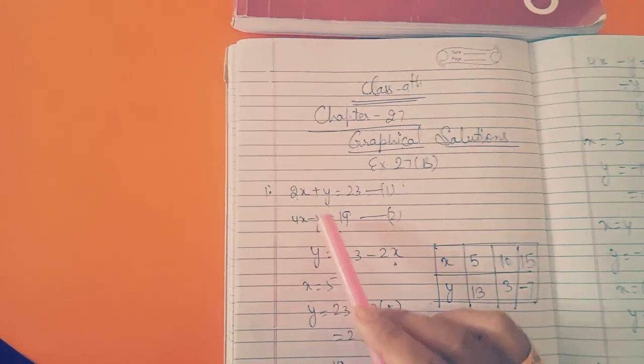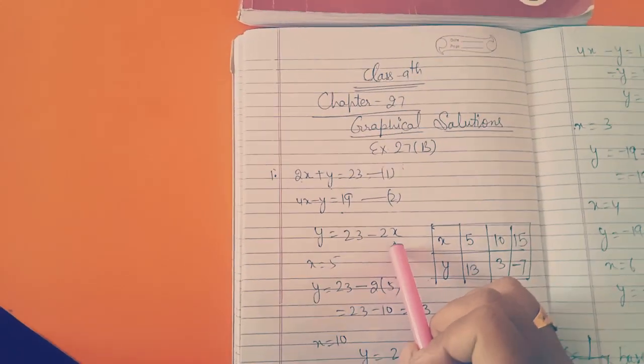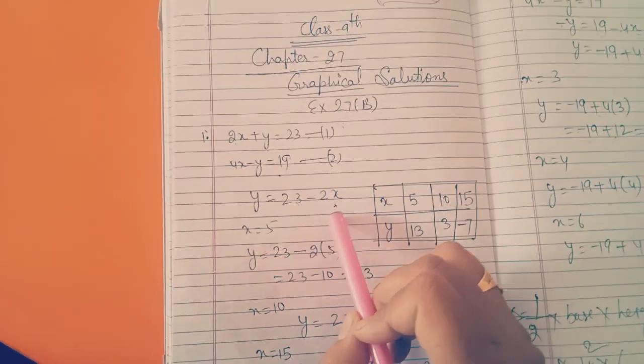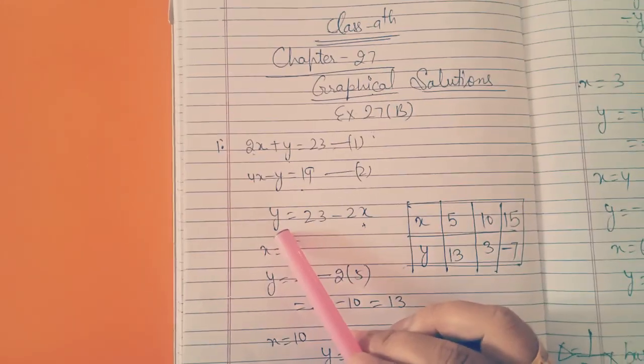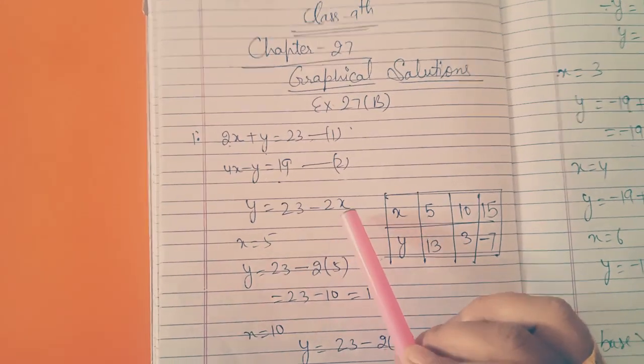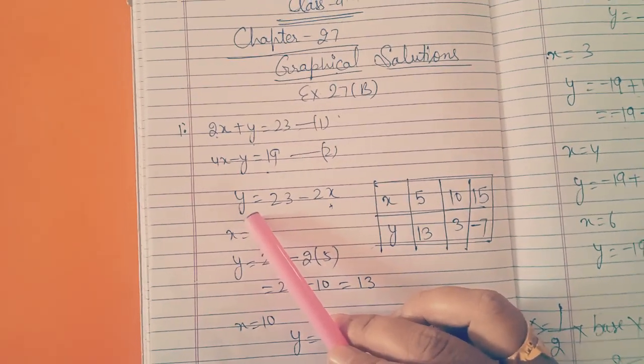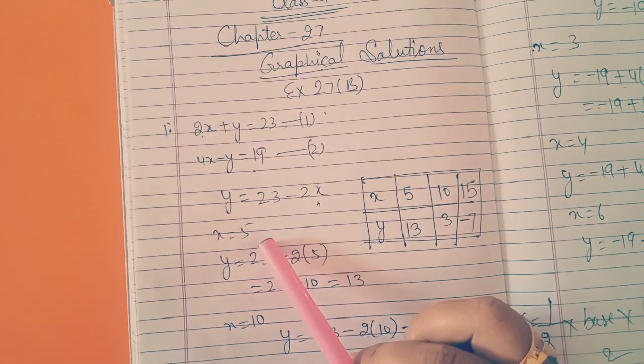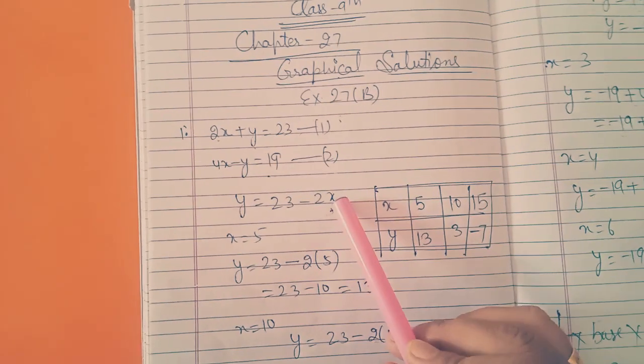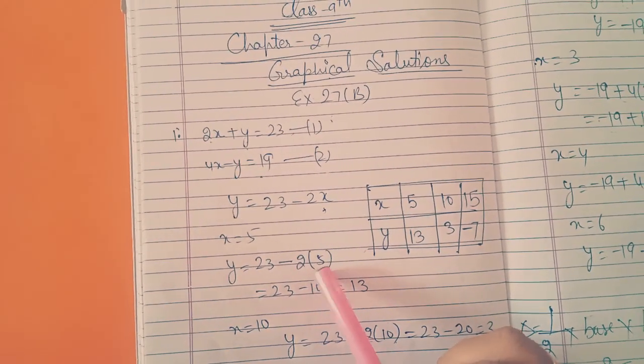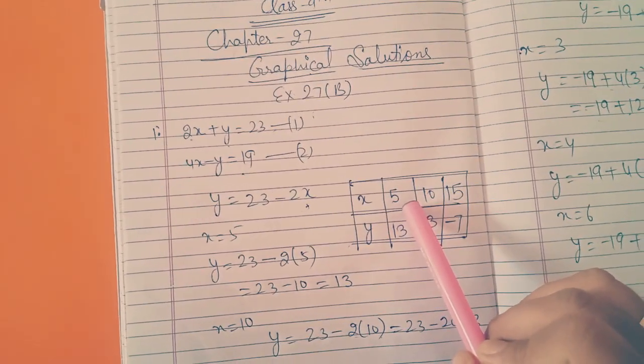Let us take first equation. Y will be as it is, so 2x will be shifted to the right hand side. So y equals 23 minus 2x. Then we will make the table for three values. Y here is dependent and x is independent. Means we can put here any value of x and we can find the value of y. Suppose I put here 5, we will get 23 minus 2 into 5, that's 10. So 23 minus 10 is 13. So in the table we will write 5 and 13.